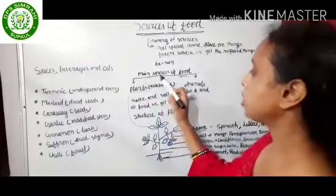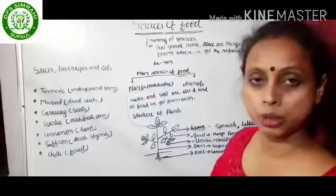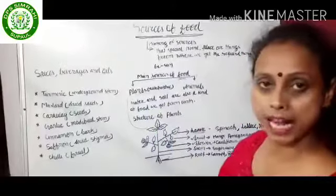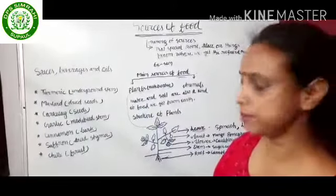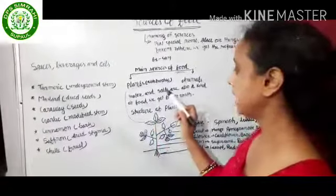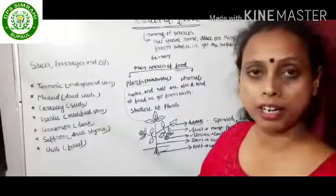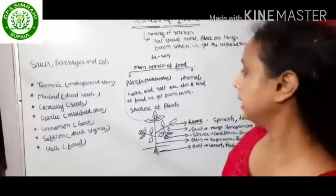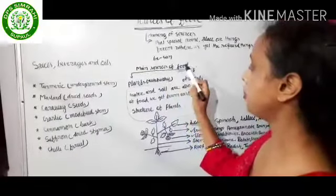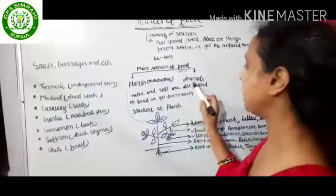The main sources of food are divided into two parts: plants and animals. We also get food like water and salt from our earth. But the main sources of food are plants and animals.